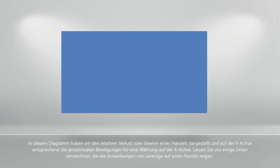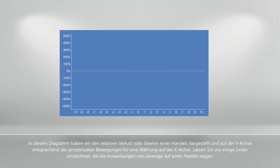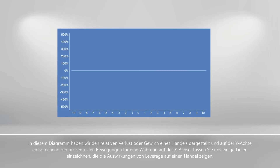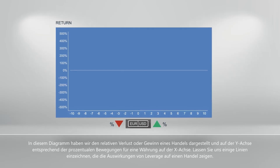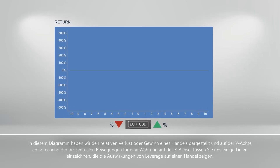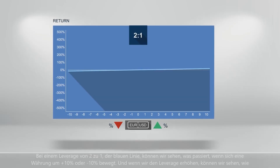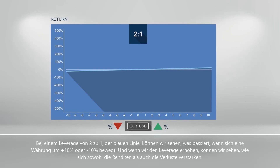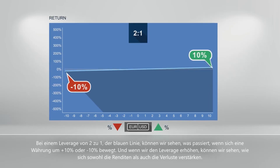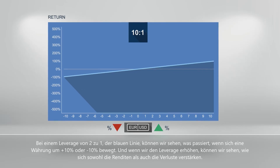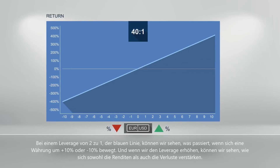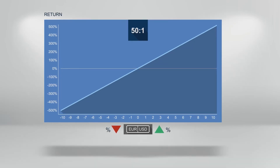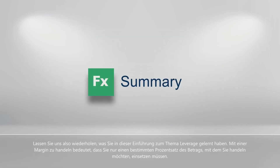On this chart, we have the relative loss or gain of a trade shown on the y-axis, corresponding to percentage movements for a currency on the x-axis. Let's plot some lines that show the effects of leverage on a trade. With 2 to 1 leverage — the blue line — we can see what happens if a currency moves by plus 10% or minus 10%. As we increase the leverage, we can then see how both the returns and losses are amplified.